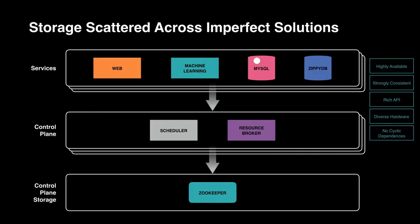When we started this project, we found that control plane services were starting to scatter their storage solutions among a large number of different options, none of which really meets all these needs. Some are storing their data in MySQL because they want that rich API. A lot are storing their data in Zookeeper — it's well-tested at Facebook, it's a rock. But other services are struggling with the fact that Zookeeper constrains the size of data that can be stored in a single ensemble, so they're using compression, sharding, and a lot of application-specific techniques.